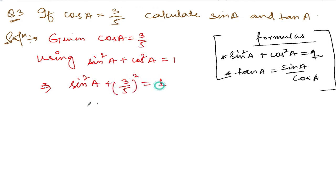So sin²a = 1 - (3/5)². Transferring this term to the other side, it becomes 1 - 9/25. Taking the LCM, 25 × 1 - 9 = 25 - 9 = 16 over 25. So sin²a = 16/25.